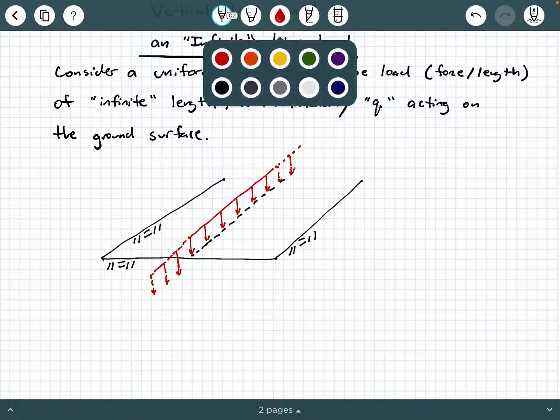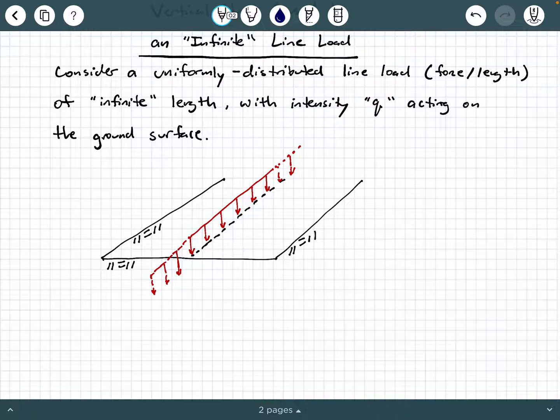So let's consider a point A and I'm going to put this point A somewhere over here. And I'm going to say that this point A has some distance of Z below the ground surface and it has some horizontal distance of X away from where the line load is being applied on the ground surface. So the horizontal distance again is X and Z is the vertical distance.